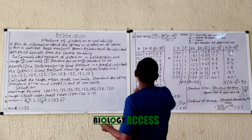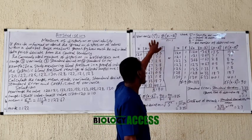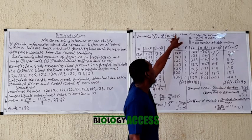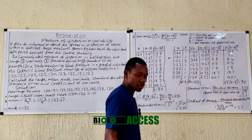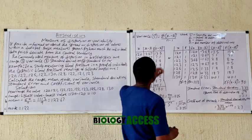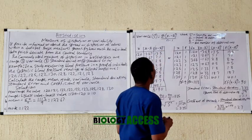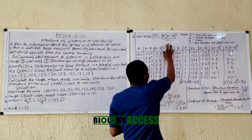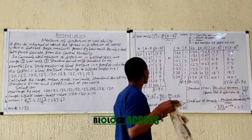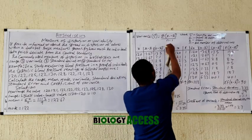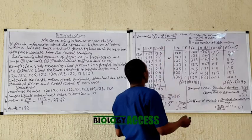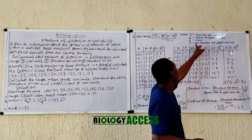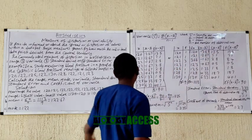For variance, it is calculated using the formula: summation of (x minus x-bar) squared, all over n minus 1. Note that this formula is for sample variance. For population variance, you divide by N (the population size) instead of n minus 1. Since we are dealing with a sample here, we use the sample variance formula. The components are: x is the observed value, x-bar is the mean, and n is the number of observations.